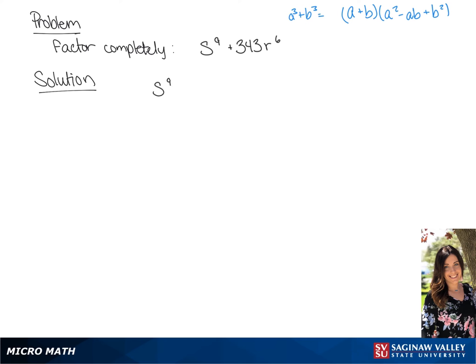We're going to factor s to the 9th power plus 343r to the 6th power. The first thing we're going to do is find our a term, so we're going to take the cubed root of s to the 9th power. We will get a equals s cubed.